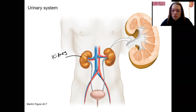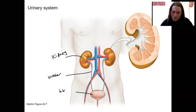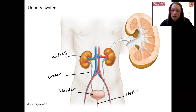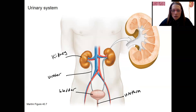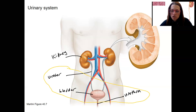The other structures of the urinary system are the ureter, which carries urine from the kidney to the bladder; the bladder, which stores urine; and then the urethra, which transports urine out of the body. So these three structures are involved in the transport and storage of urine.